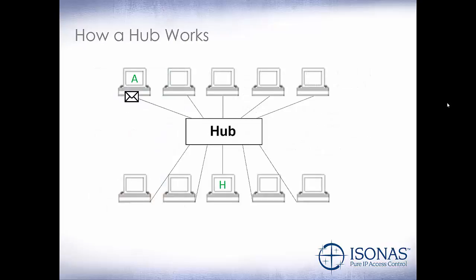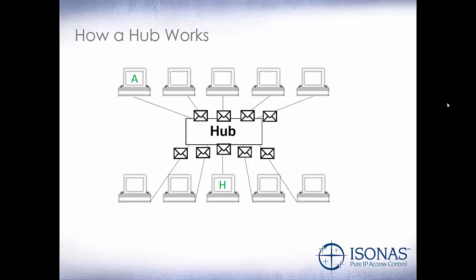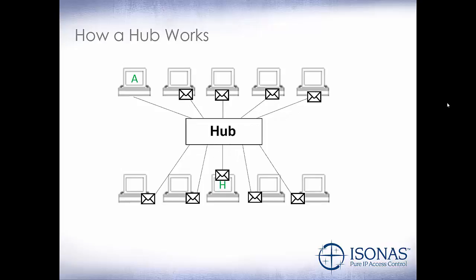So how does a hub work? Let's say PCA wants to send a frame to PCH. PCA sends the frame down the wire to the hub. The hub takes that information in and basically shouts it out every single port to all the PCs out there. All the PCs take it in, look at it, and if it's not for them, they discard it. If it is for them, they take the information and process it. This is similar to the old town crier in the center of town who'd shout out information to everybody around. If hubs are connected together, you're going to have a huge collision domain, where all of these packets may collide with each other and cause serious problems on the network.